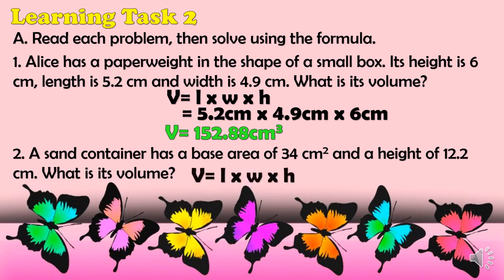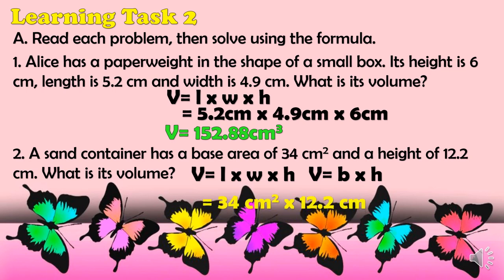Problem 2: A sand container has a base area of 34 square centimeters and a height of 12.2 centimeters. What is its volume? Since the base area is given, we use V = B × h. Substituting: 34 cm² × 12.2 cm. Multiplying gives a volume of 414 cubic centimeters.